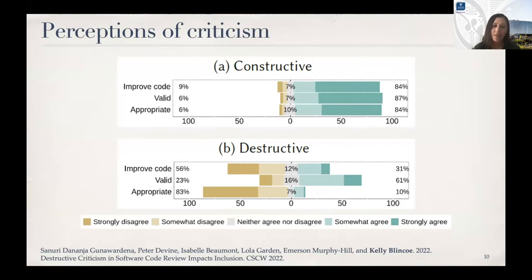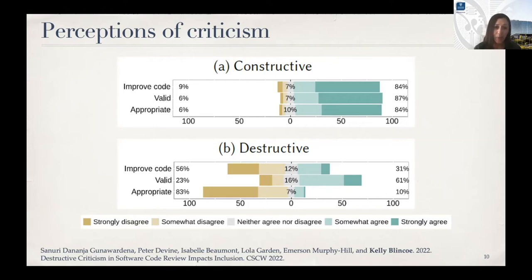We had 43 men, 43 women, three non-binary, and four who chose not to disclose their gender. The average development experience was about 7.8 years. We had open source developers, industry developers, and students — roughly split between the three groups. For the perception results, we asked three questions about the feedback from the vignettes: whether it would help improve their code, whether it was valid, and whether it was appropriate. Participants overwhelmingly agreed the constructive feedback would help improve code, was valid, and appropriate.